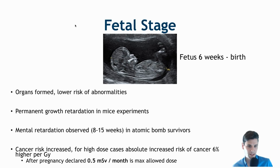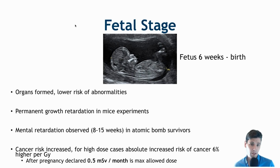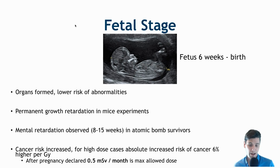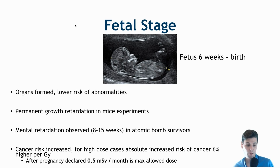In the fetal stage — six weeks through birth — the organs are essentially formed, so there is a lower risk of abnormalities. However, there are risks in mice of permanent growth retardation, and it has been documented in atomic bomb survivors that during the 8 to 15 week period there can also be mental retardation at a higher rate. There is also a cancer induction potential, estimated at about 6% higher per gray, and therefore after a pregnancy is declared the allowable radiation dose is only 0.5 millisieverts per month.